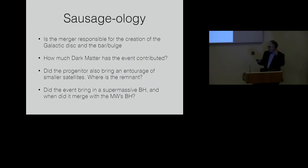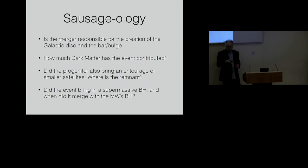There are lots of outstanding questions because Gaia is changing the rules in galactic astronomy. What would we like to know? We'd like to know, is this merger responsible for the creation of the galactic disk? If there was a pre-existing disk, what happened when this big object came in? How much dark matter has this event contributed? Did the progenitor also bring in an entourage of smaller satellites? If the large Magellanic cloud fell into the galaxy, we know there is a smaller galaxy that orbits the large Magellanic cloud. And if this was a galaxy as big as I said, it too would have a black hole in the center. And so it would have brought a black hole into the Milky Way galaxy. And when did it merge with the Milky Way's black hole?